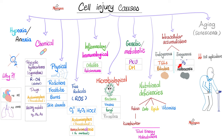Intracellular accumulation of stuff coming from the outside includes lead or anthracotic pigment. Remember, anthrax is not the same as anthracosis. Anthracosis is a pigment - no big deal. But anthrax can kill you. Next, we have endogenous intracellular accumulation coming from within you, such as triglycerides or bilirubin.